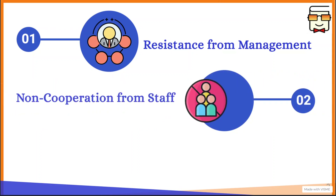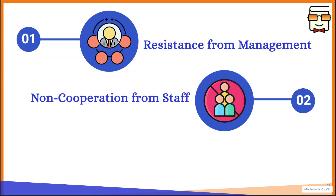The second constraint is the non-cooperation from the staff. Even when the management wants to bring up an MIS, the staff might not cooperate, as it is their responsibility to use the MIS and learn new skills to use it effectively. Staff might not want to come out of their comfort zone and adapt to this new environment. Some staff members might also feel that the automation brought by the MIS could lead to the firing or removal of employees from the company.